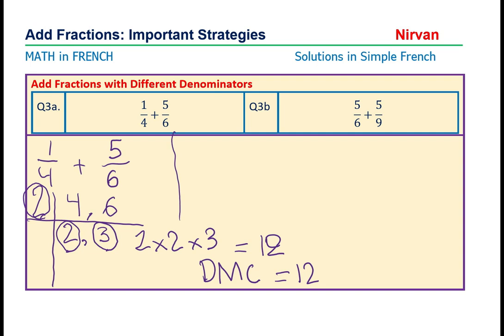Alors, le dénominateur ici est douze et ici est douze. Quatre fois trois, tu sais, est douze. Alors, tu dois multiplier un et trois. Et pour six, pour entrer douze, nous devons multiplier par deux. Alors, nous devons multiplier cinq par deux.